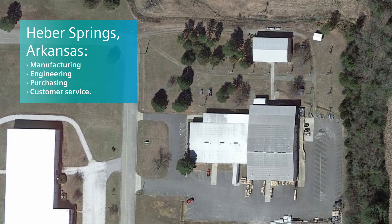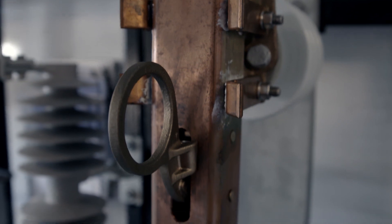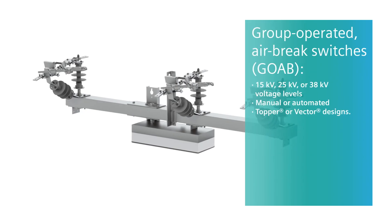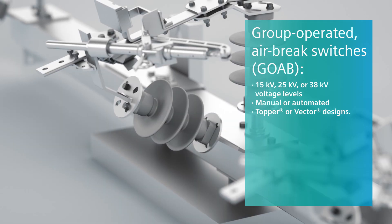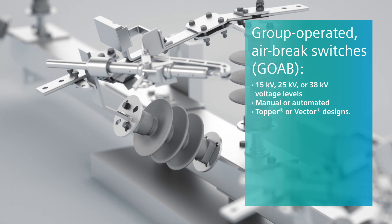Technical support is just a single call away. Siemens offers various disconnect switch designs. The group operated air brake switches have various ratings up to 38 kV. They can be operated manually or motorized and can be provided with SCADA communications capabilities.